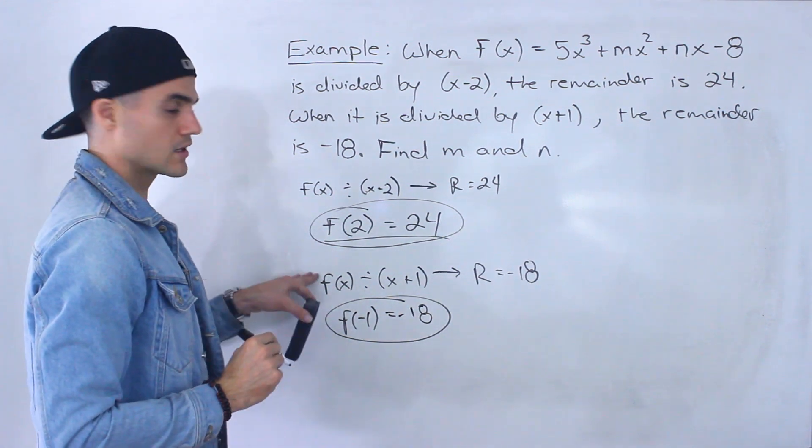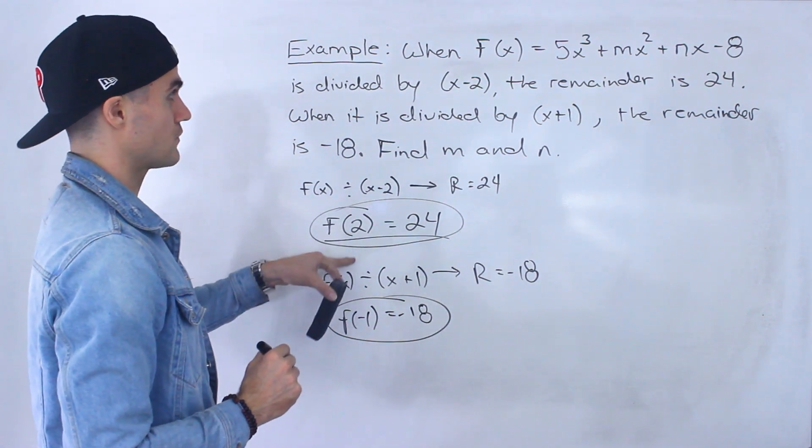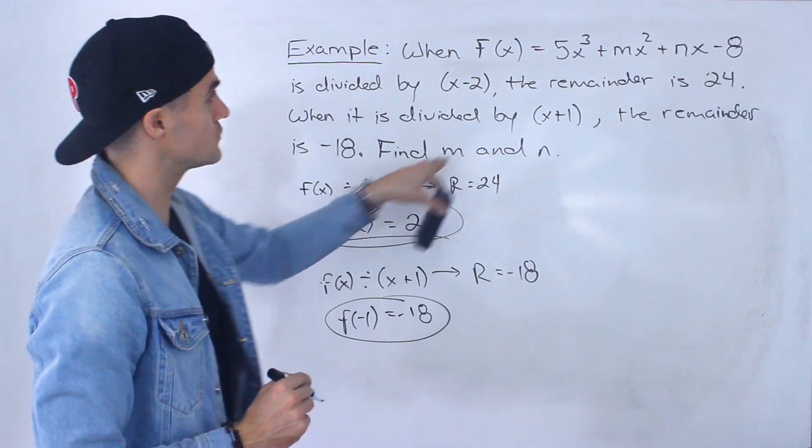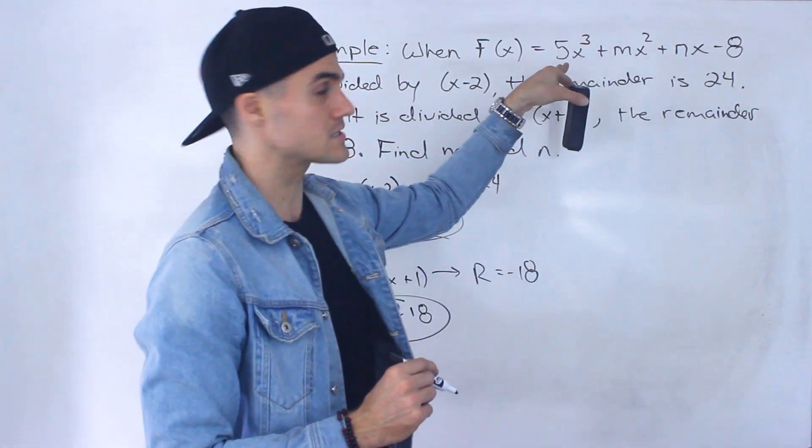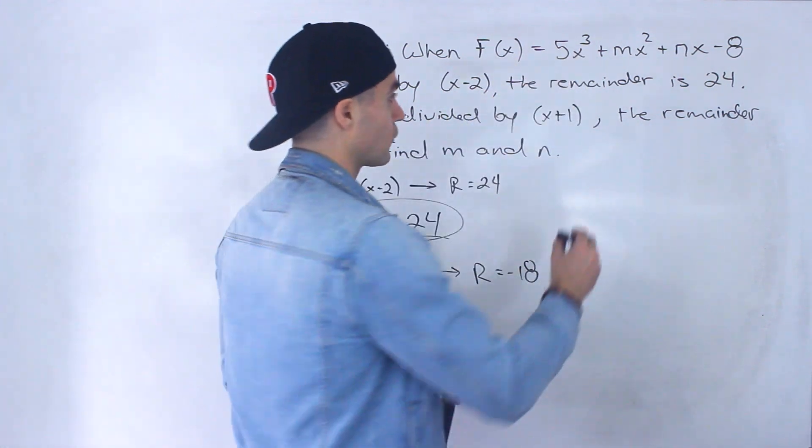And so we can make two equations from both of these. So f(2), what we would do is we would plug in 2 for all the x's. So 2 to the power of 3 is 8 times 5 is 40.